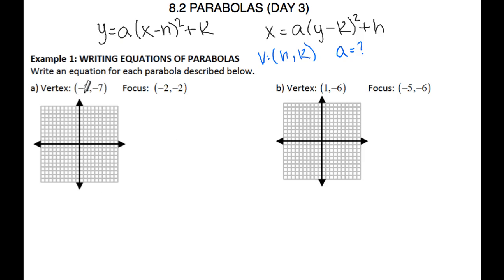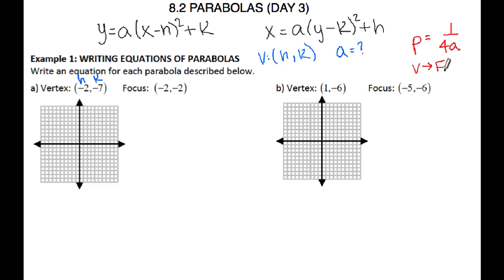We already have the vertex, so we already know h and k. The only piece of information we're really missing is a. The way we figure out a is by looking at the focus. From yesterday's lesson, we had the formula p equals 1 over 4a, where p is the distance from the vertex to the focus, and also the distance from the vertex to the directrix. If we know p, we can solve for a.